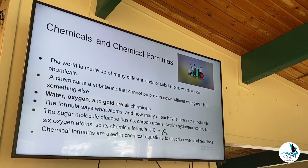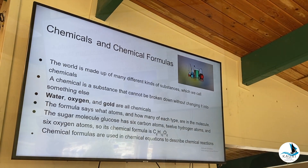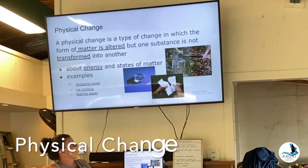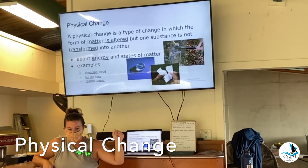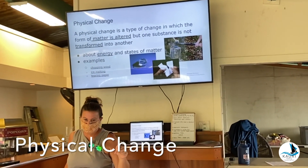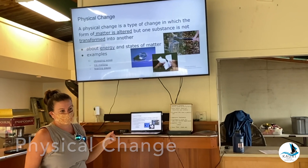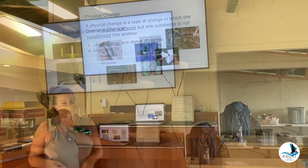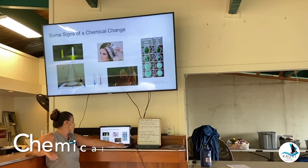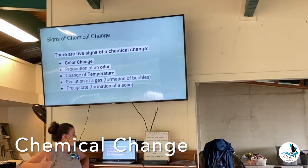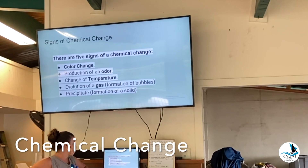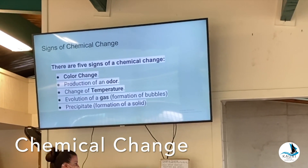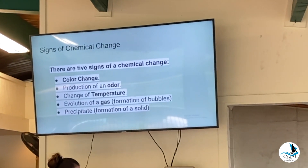You're changing a chemical into a new chemical. A physical change is when you change something — like if you melt water, it's a physical change because you can freeze it again; it's not a chemical reaction. When you have chemical changes, there's a color change, there's production of an odor maybe, and the temperature might change.